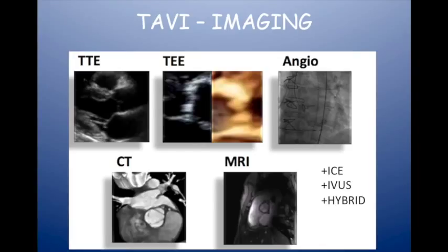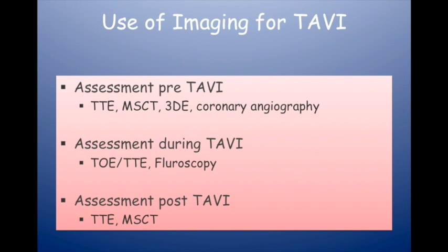It's important when you do the follow-up echo assessments that you know which valve was put in, because they look quite different and they behave differently in terms of how you assess velocities. The imaging modalities all matter: transthoracic echo, transesophageal echo, 2D and 3D echo, angiography pre-procedure and during procedure, and multi-slice CT — these are all important modalities when assessing TAVI patients.